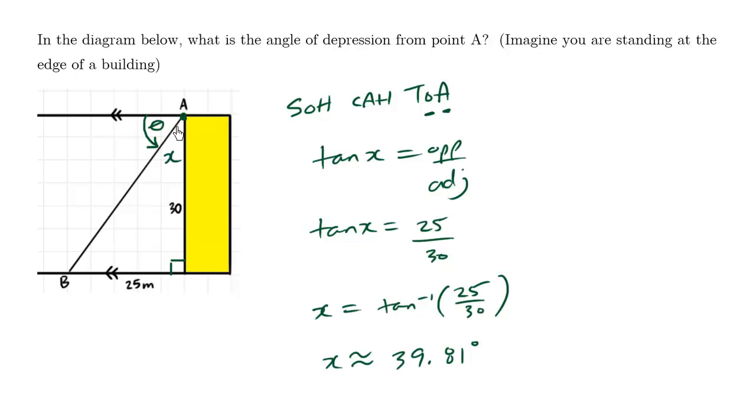So the key is that this here is also a right angle. So we can find theta by using 90 minus X. So theta equals 90 degrees minus X which is approximately 50.2 degrees.